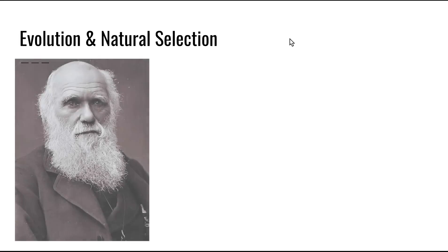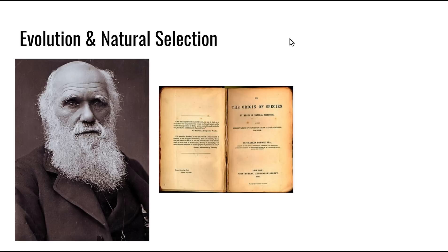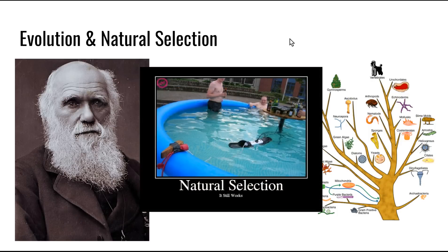Evolution is the most pervasive principle in biology. In 1859, Charles Darwin published a book called On the Origin of Species by Means of Natural Selection, in which he presented a convincing case for evolution. In biology, evolution refers to the processes that have changed life on Earth from its earliest forms to the diversity that characterises it today. Darwin made two major points: he argued from evidence that species were not created in their present form but had evolved from ancestral species, and he proposed a mechanism for evolution which he termed natural selection.